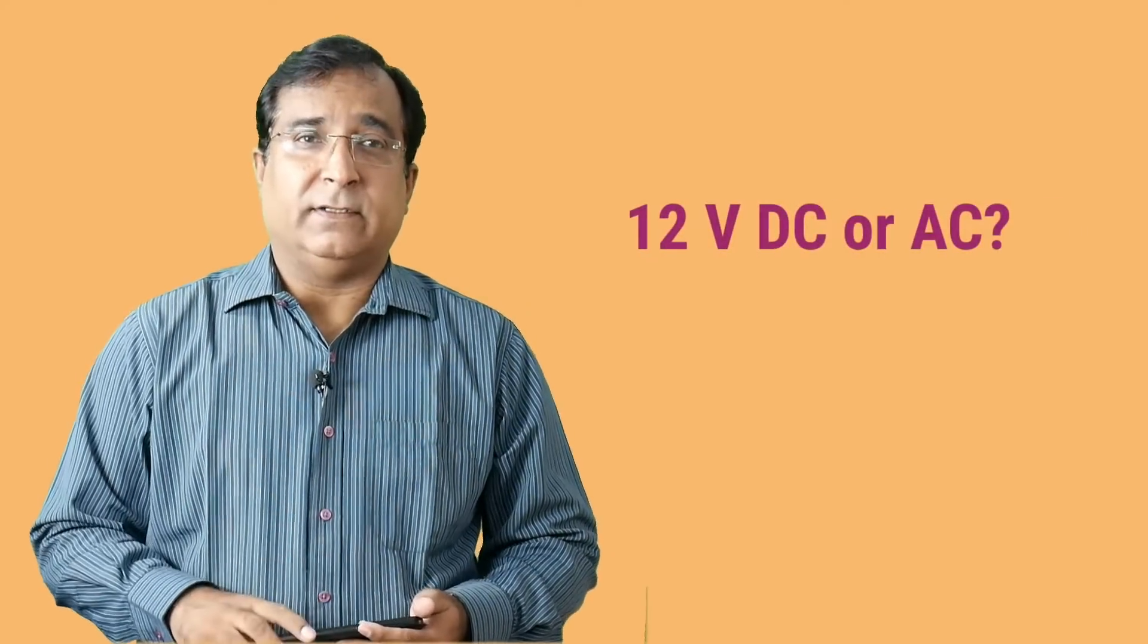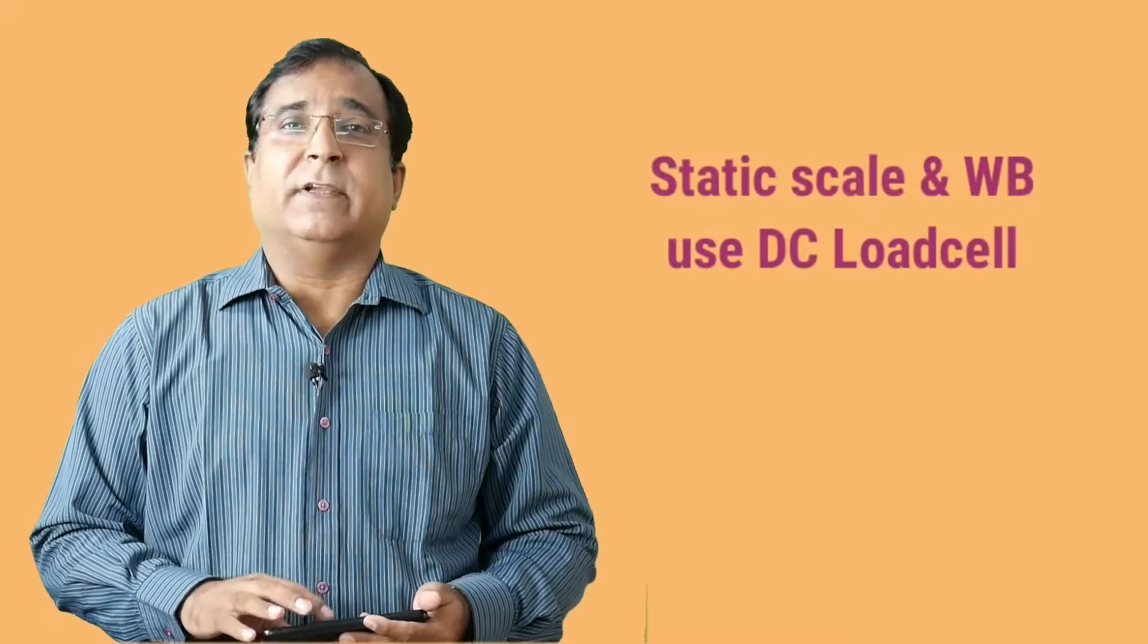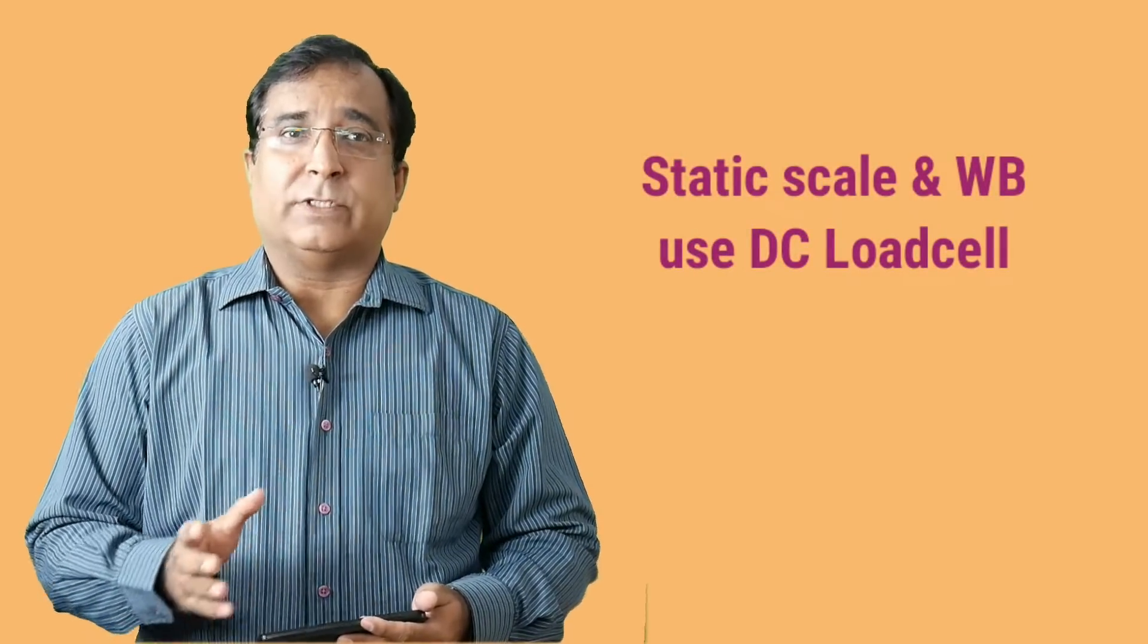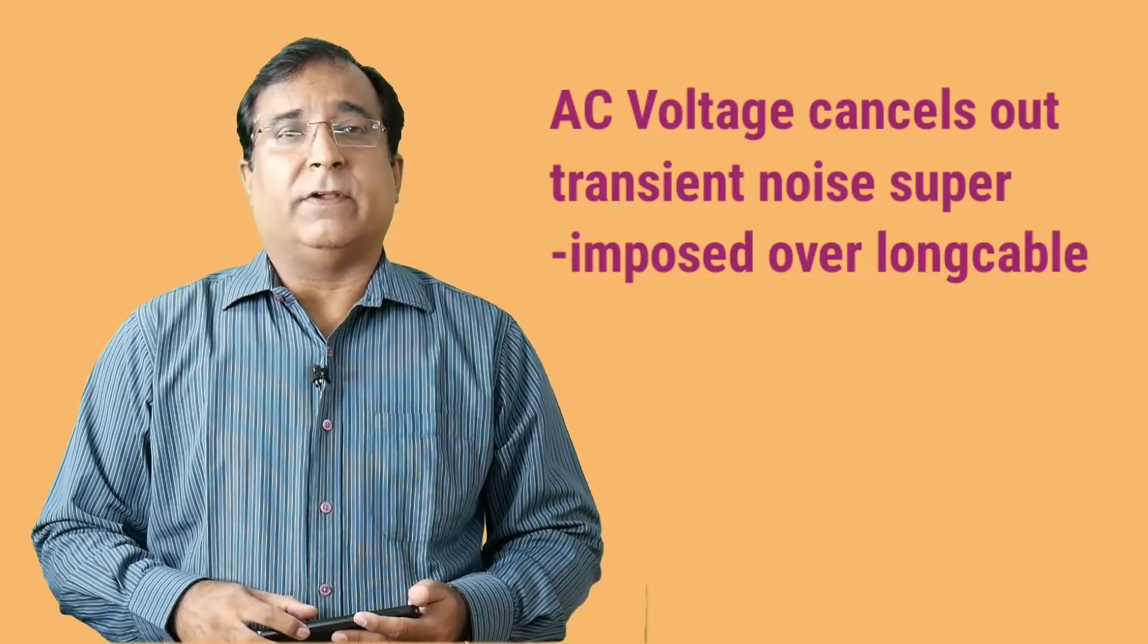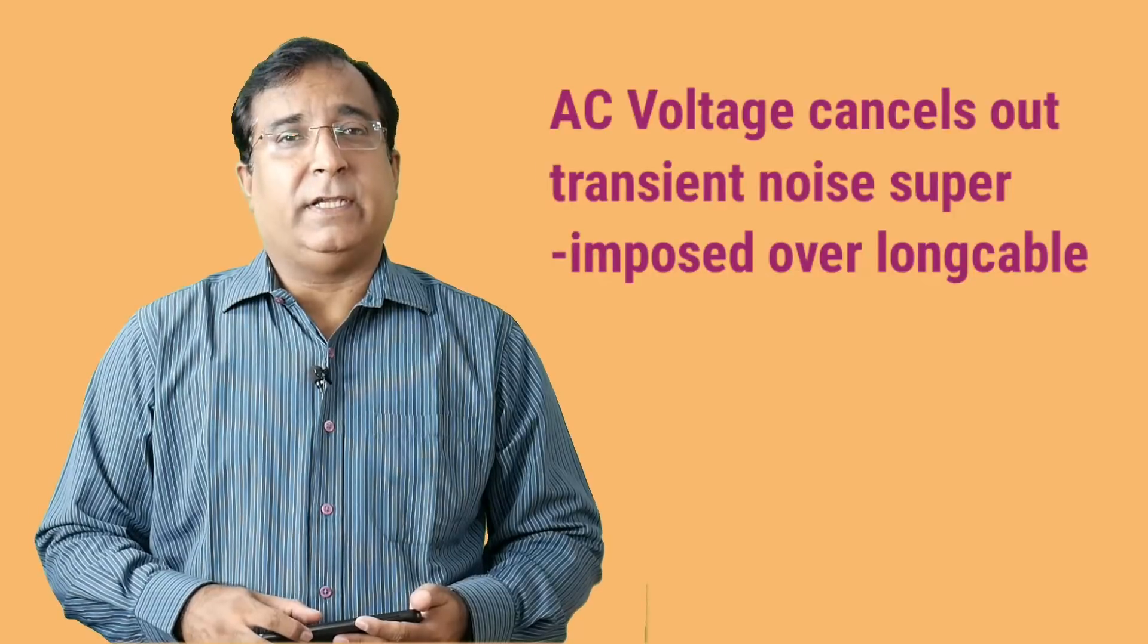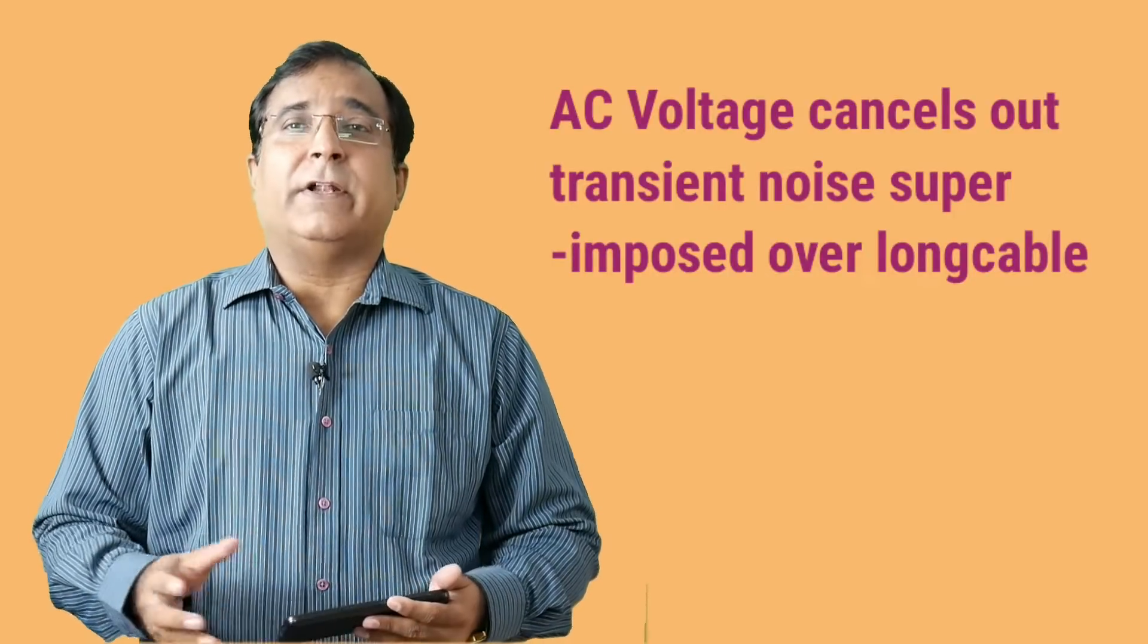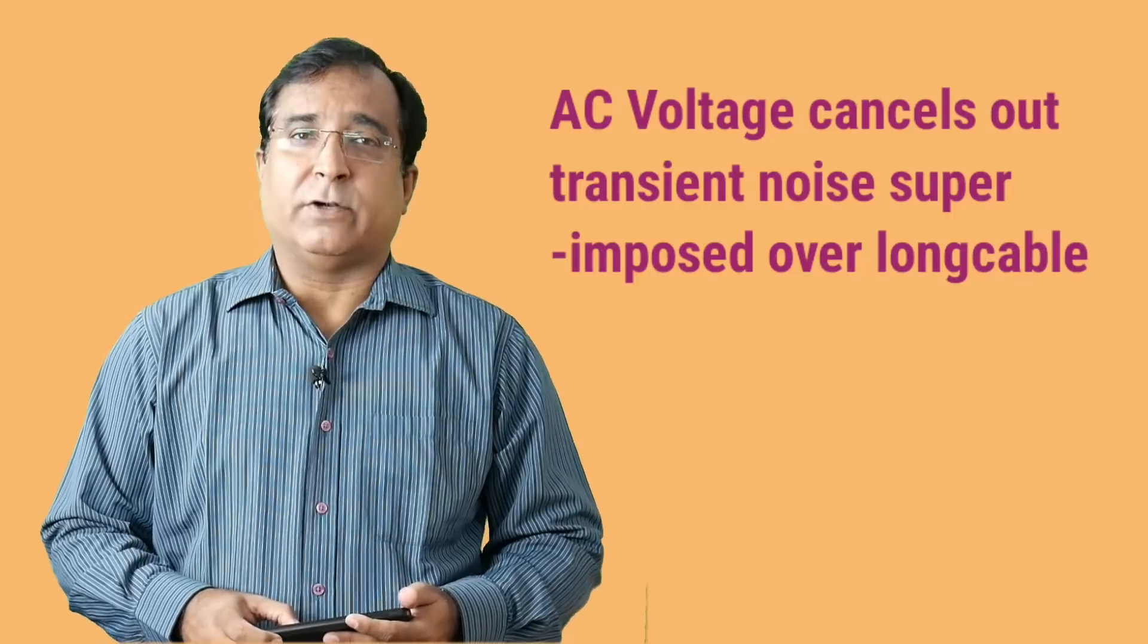Now this excitation is 12 volt AC or DC. Mostly this is DC voltage in static measurement such as wave bridge, weighing scale where indicator and load cell is mounted in close proximity. But dynamic measurement system such as wave feeder, belt wear, solid flow feeder, it may have a high frequency AC voltage just to avoid induced voltage and noise superimposed over long cable running in plant operation.